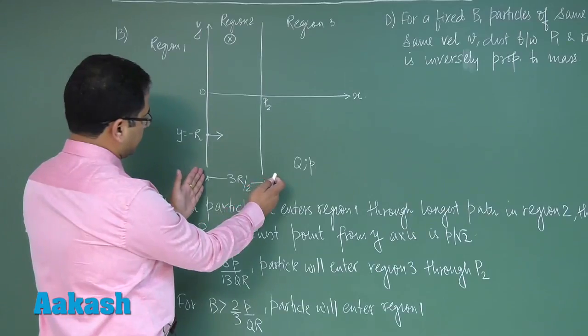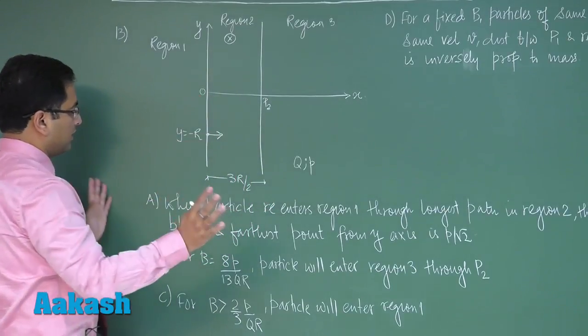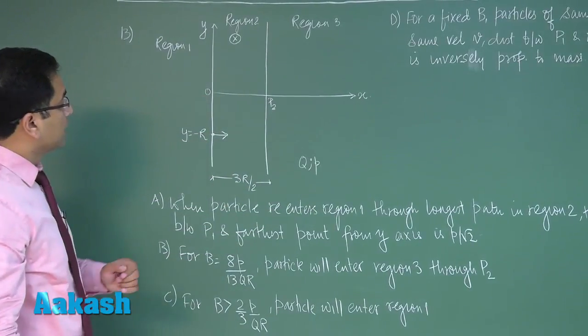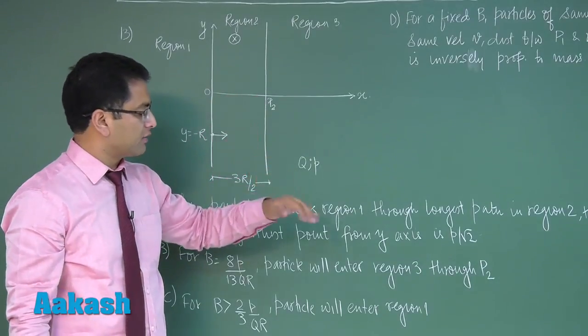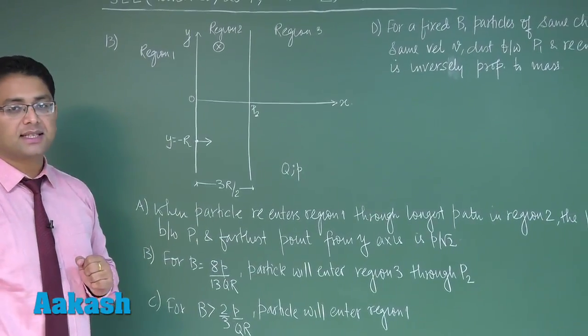From the point y equals minus r. The figure may not seem scaled, this is 3r by 2, this is r. Now on the basis of this given fact we got to go with the options a, b, c, d.